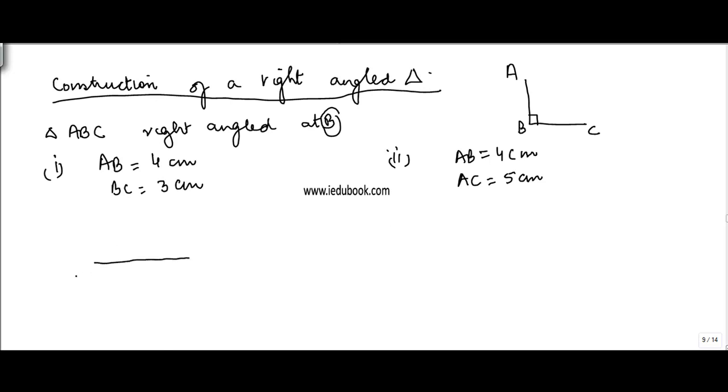So I draw a line BC. In this case I know it is three centimeter. AB is equal to four centimeter. Now A is lying here. So first what I need to do is I need to draw a perpendicular here.